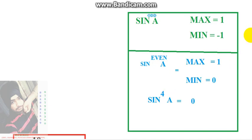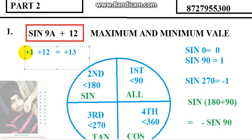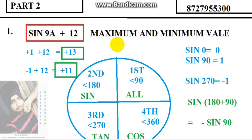Now solving the first problem: sin(9a) + 12. Since sin(9a) is an odd power, its maximum value is 1. So the maximum of the expression is 1 + 12 = 13. For the minimum, sin(9a) equals minus 1, so minus 1 + 12 = 11. Therefore the maximum value is 13 and the minimum value is 11.